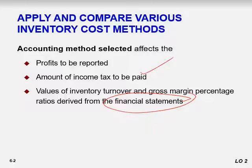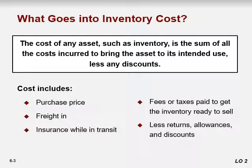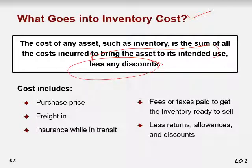What goes into inventory costs? The cost of any asset such as inventory is the sum of all costs incurred to bring the asset to its intended use, less any discounts. This includes purchase price, shipping and insurance paid while goods are in transit, any taxes paid, and less any returns, allowances, and discounts. Anything spent to bring inventory to your store or factory premises should be added to the purchase price.